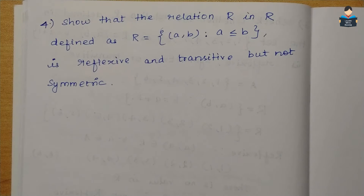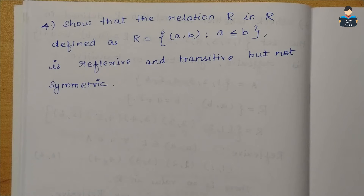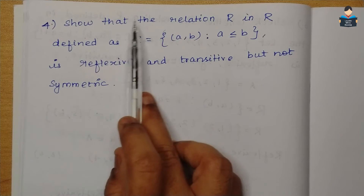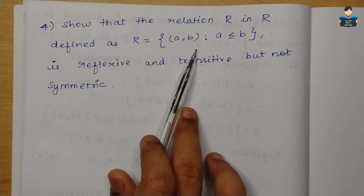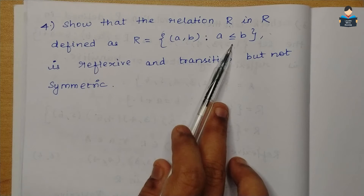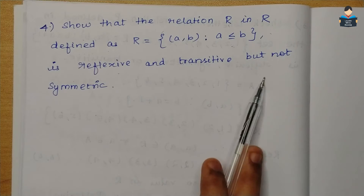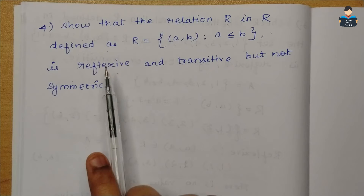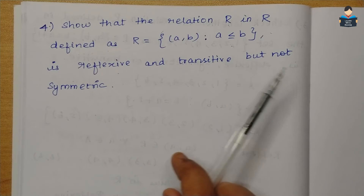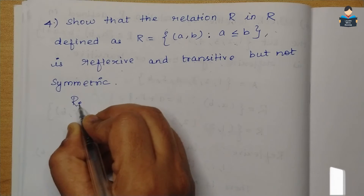Hello everyone, welcome to our channel. In this video, 12th standard NCERT Math, Chapter 1 - Relations and Functions, Exercise 1.1, Question 4: Show that the relation R in R defined as R = {(a,b) : a ≤ b} is reflexive and transitive but not symmetric.